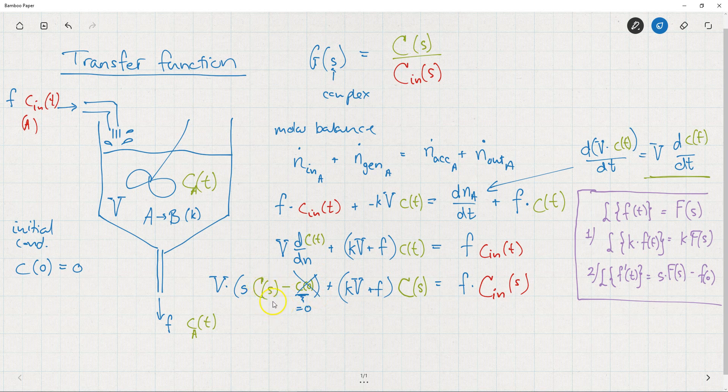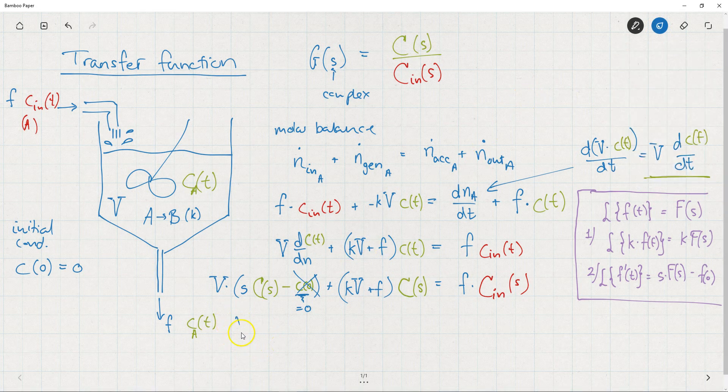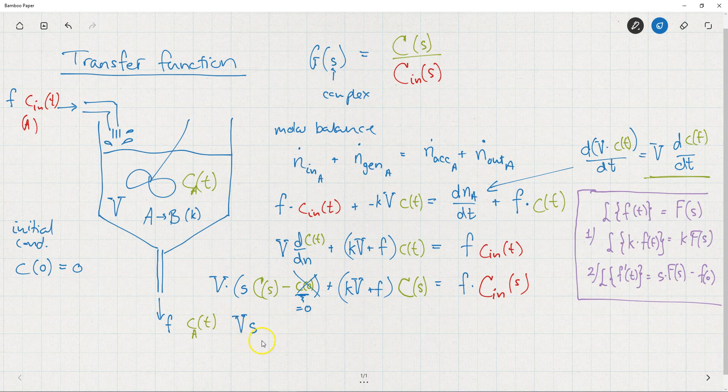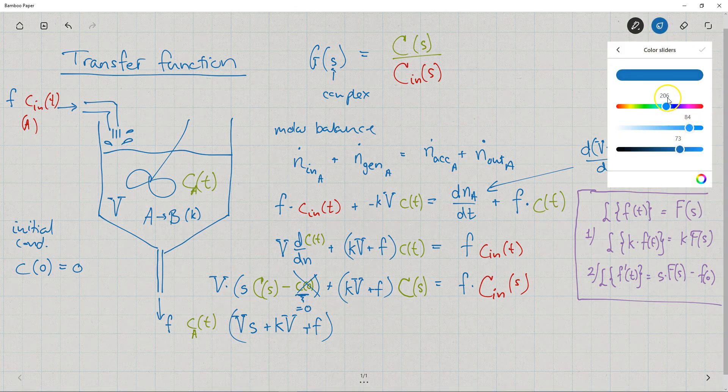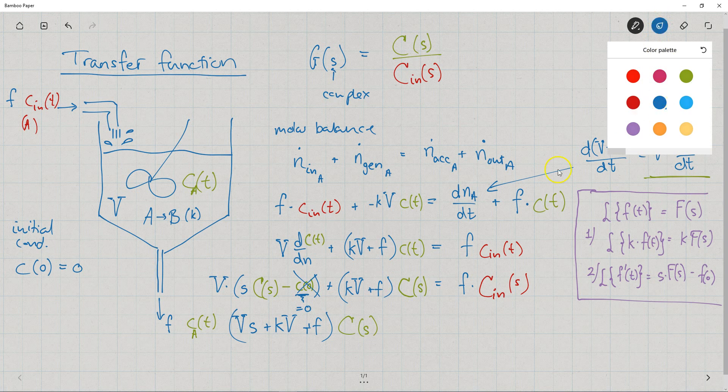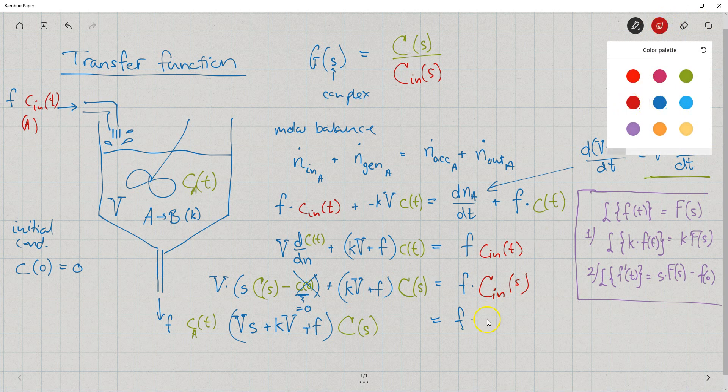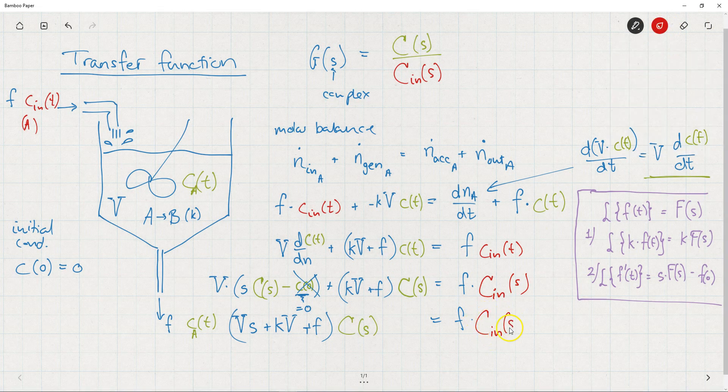And that enables us to factor out this capital C of S, because we have capital C of S here, we have capital C of S here. What we can do is write V times S plus K times V plus F, all multiplied by capital C of S. And the right-hand side is just the same, F times capital C_in of S.